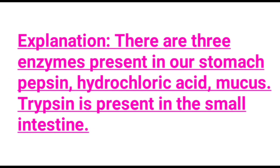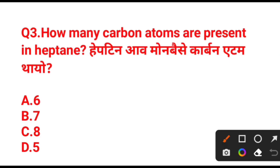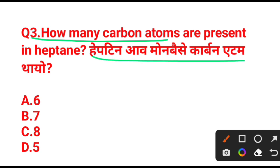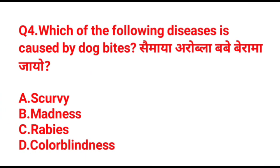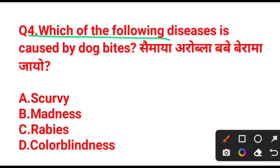Next question: how many carbon atoms are present in heptane? So, how many carbon atoms does heptane have? The answer is option B — seven. Heptane has seven carbon atoms. Option number B is the right answer.